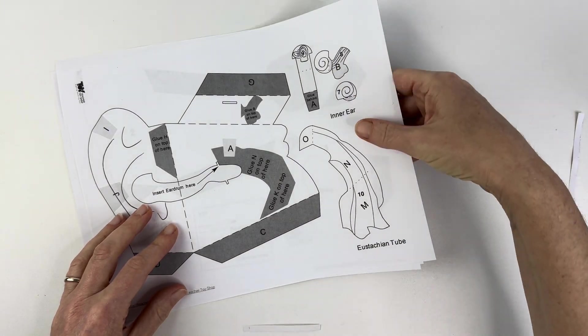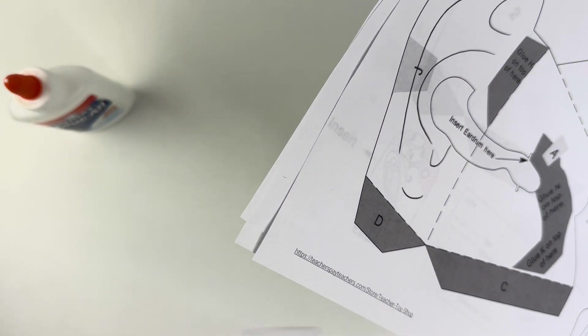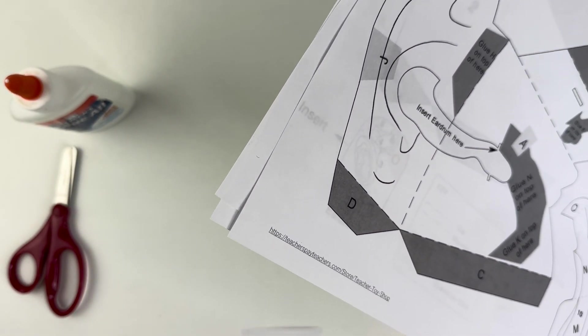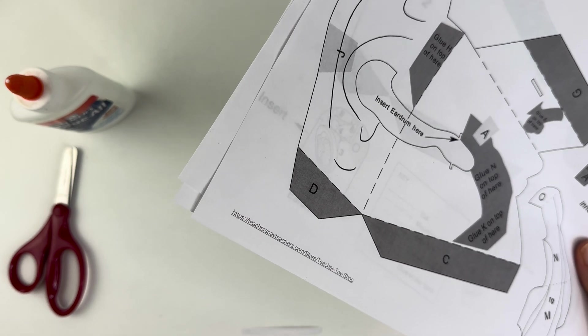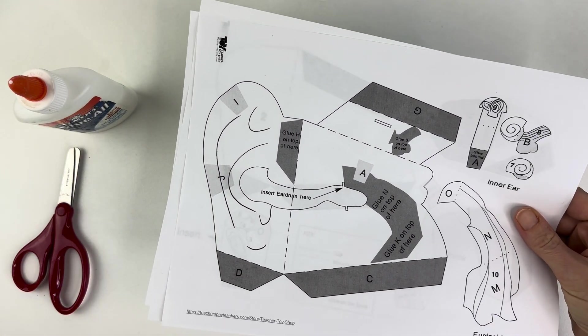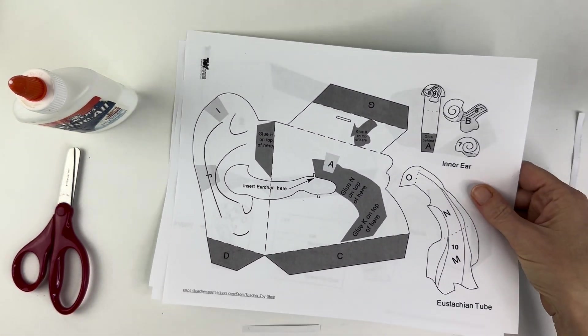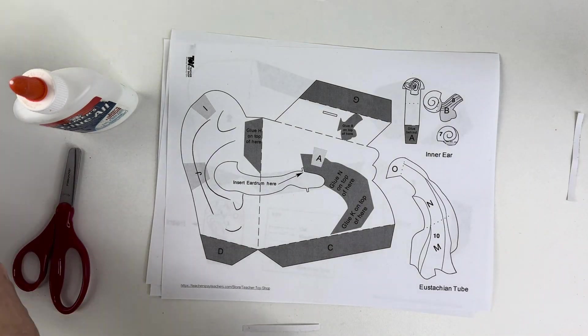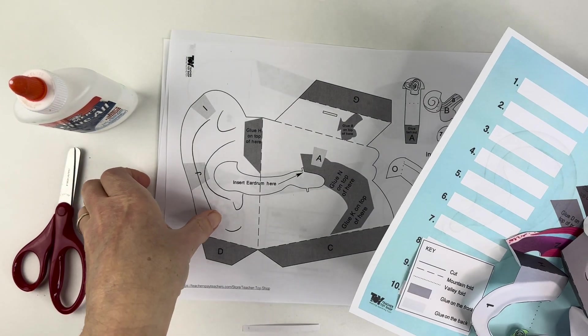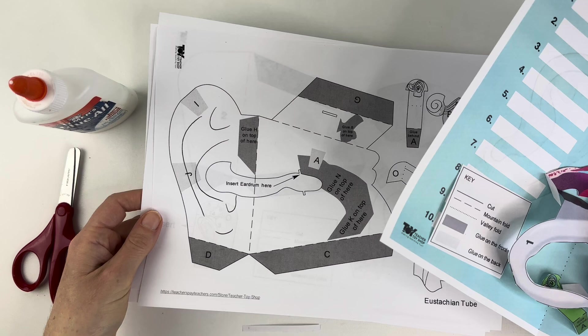You're also going to need some glue and some scissors. I'm going to show you how to make the model with the one that's already pre-colored, but you can obviously color your own. I do recommend you color the parts before you put the model together just because it's easier.